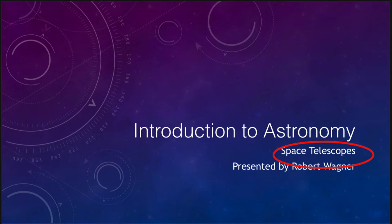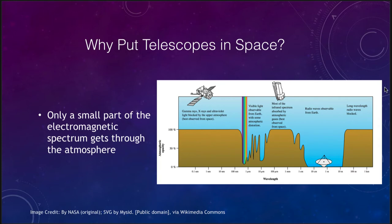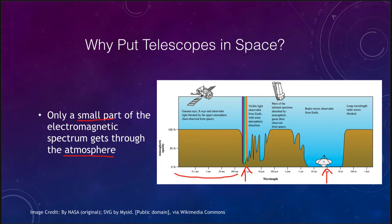Some things simply cannot be seen from the surface of the earth. Visible light makes it down to the surface of the earth, as do radio waves. But when we look at other types of electromagnetic radiation we cannot see them, and in fact only a very small portion of the electromagnetic spectrum is able to get through the atmosphere. Visible light and lots of radio waves make it through, but if we want to look at things like gamma rays, x-rays, and ultraviolet in the short wavelength portion, very little of that gets through the atmosphere.